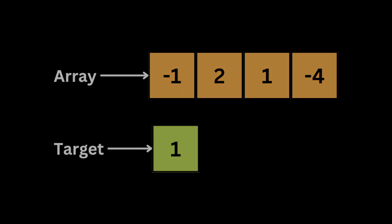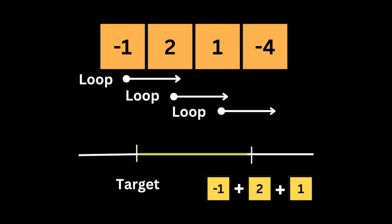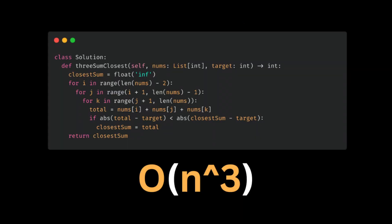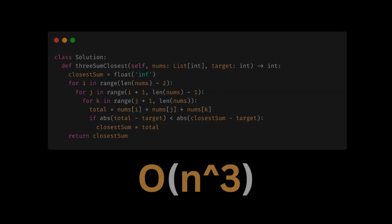The brute force approach to solve this problem is by using three for loops and iterating throughout the array. Each time we sum up the three numbers and store it inside a variable so we can keep track of the closest sum to the target. The problem with this solution is that it takes O(n³), which is an inefficient solution.